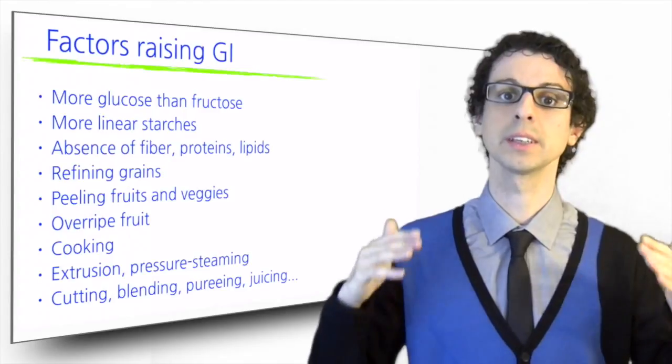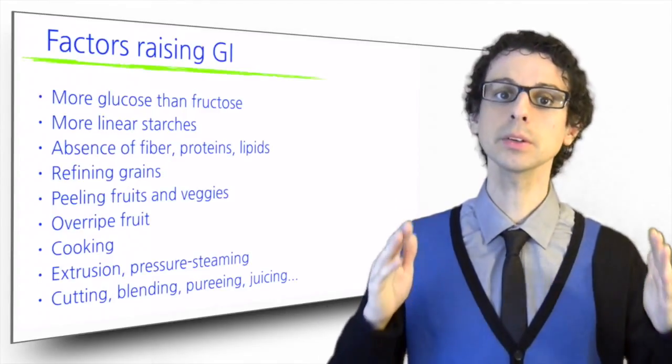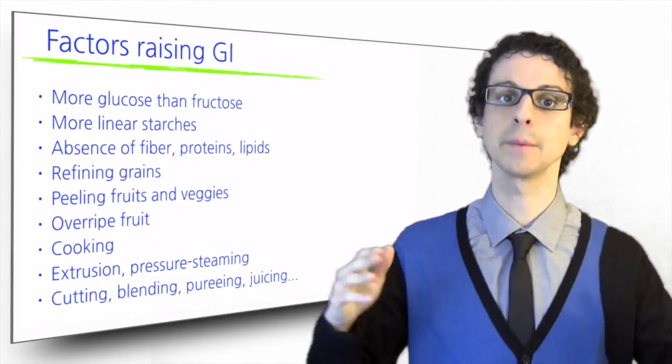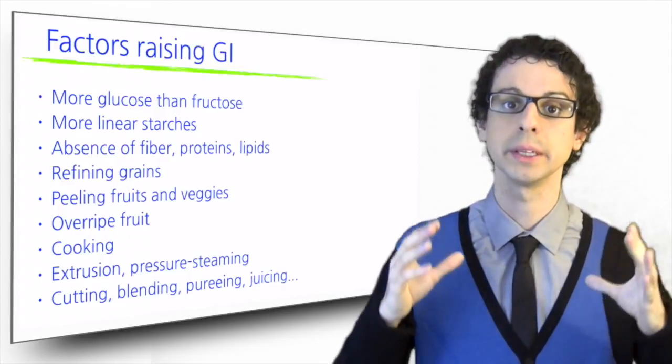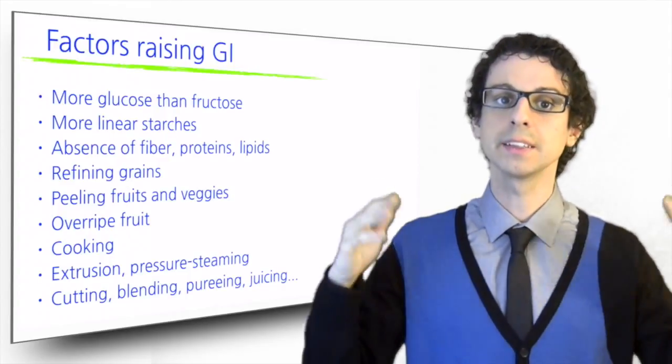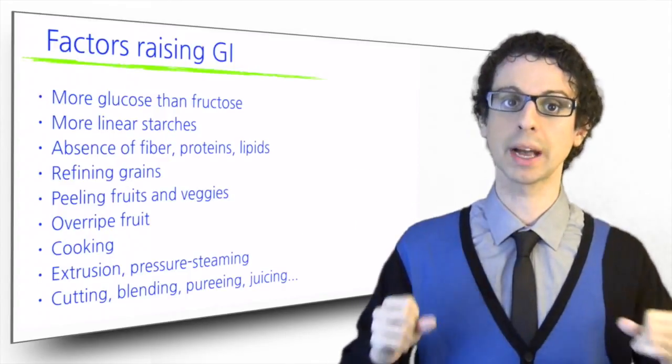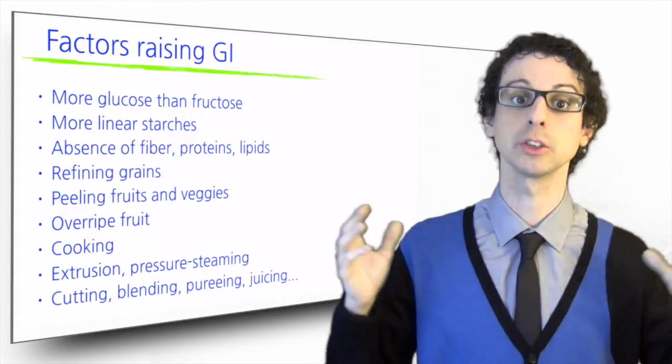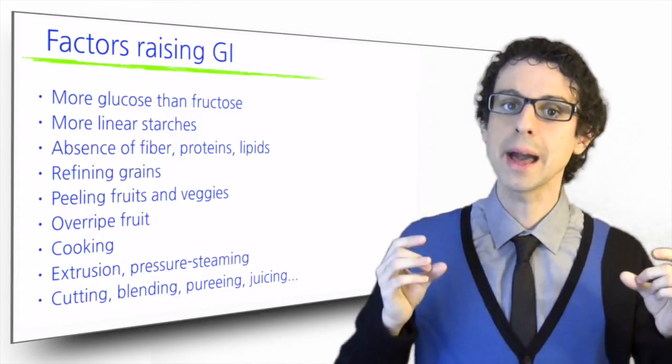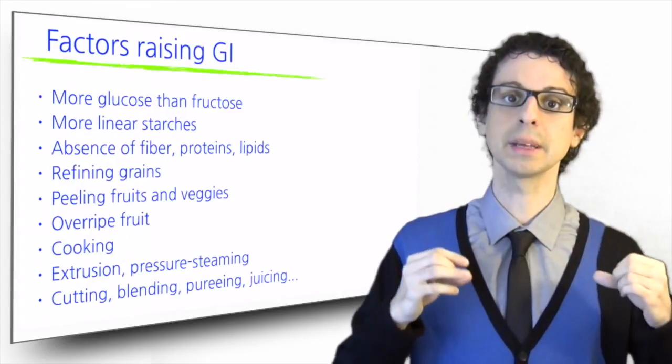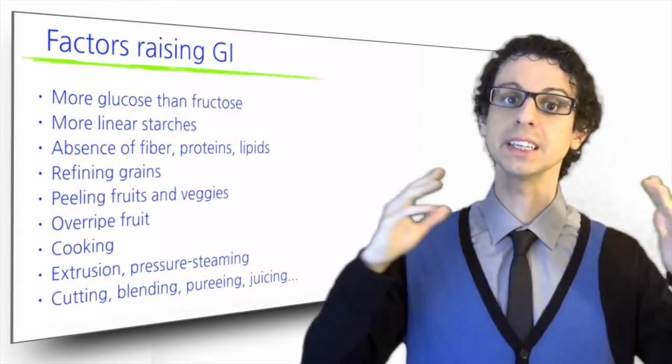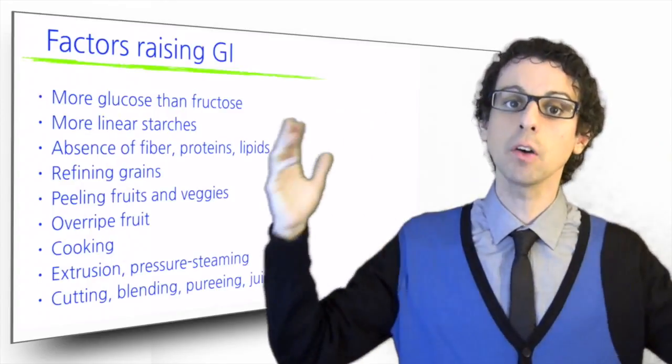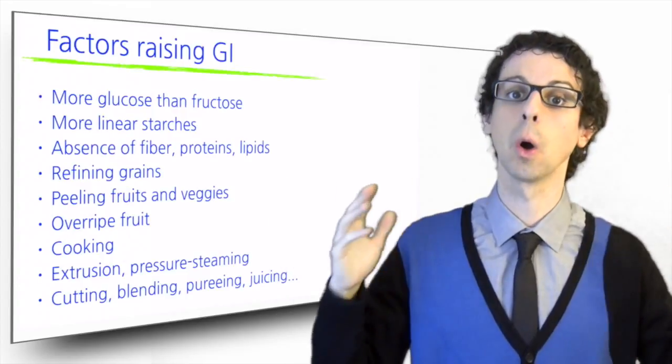So far we have talked about individual foods, but it is important to remember that most of the time we combine different foods in a meal. When we do that, these foods mix in our stomach and get digested and absorbed together. So what really matters in the end, it's not the glycemic index or the glycemic load of individual food items, but the overall glycemic load of the whole meal.